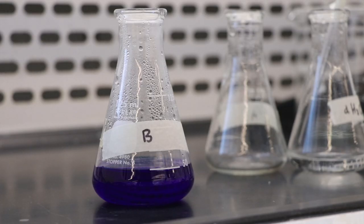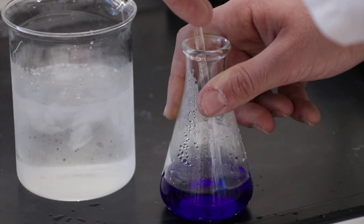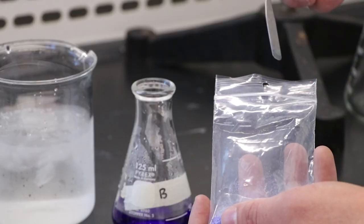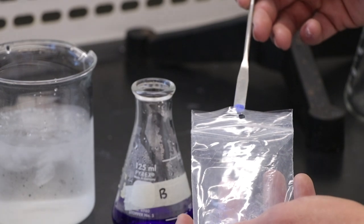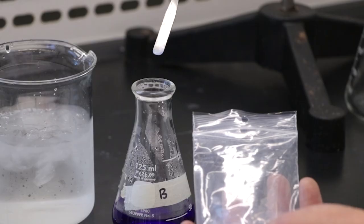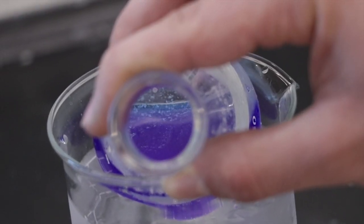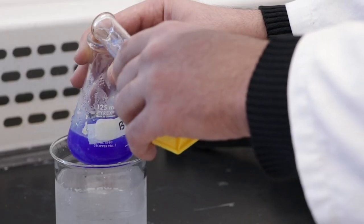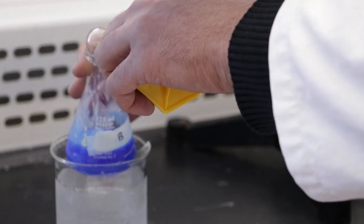If the product is not precipitating out, you can use two techniques designed to encourage precipitation. First, try scratching the inside of the flask with a glass rod in an up and down motion at the air-liquid interface. If scratching does not work, obtain a small amount of crystals of the product from your TA and add it to your solution. These seed crystals act as a template on which the dissolved product will begin to precipitate out of solution. Upon crystal formation, add 20 mL of acetone or ethanol with continuous stirring and then allow it to cool for several more minutes in the ice bath.